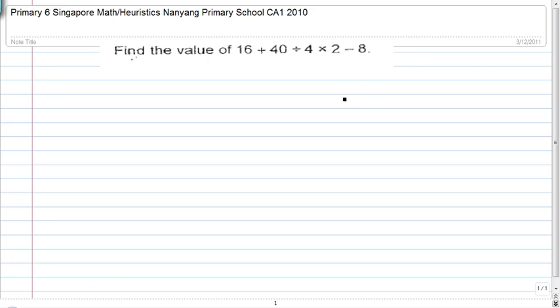Find the value of 16 plus 40 divided by 4 times 2 minus 8. I'm sure you all have heard of BODMAS.